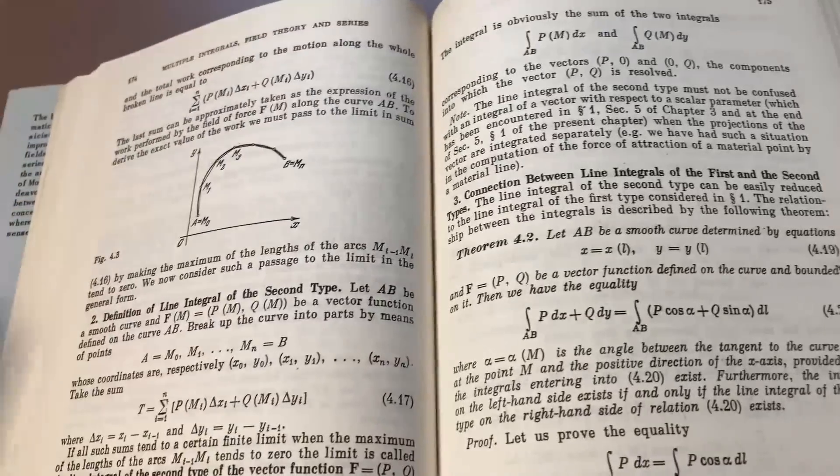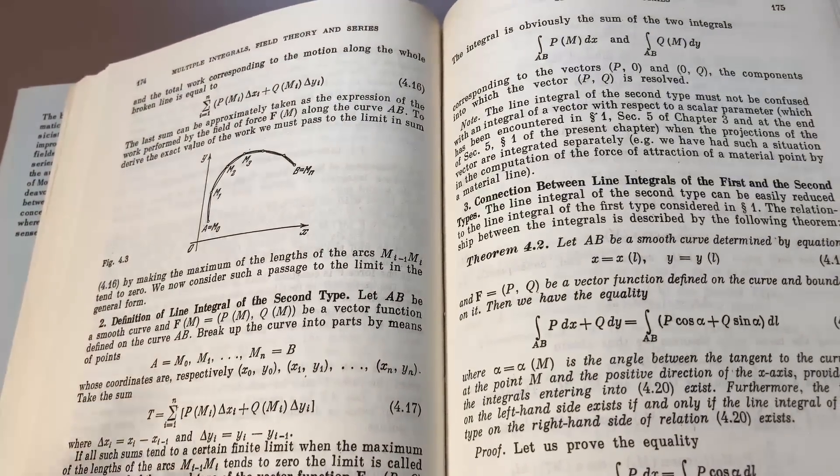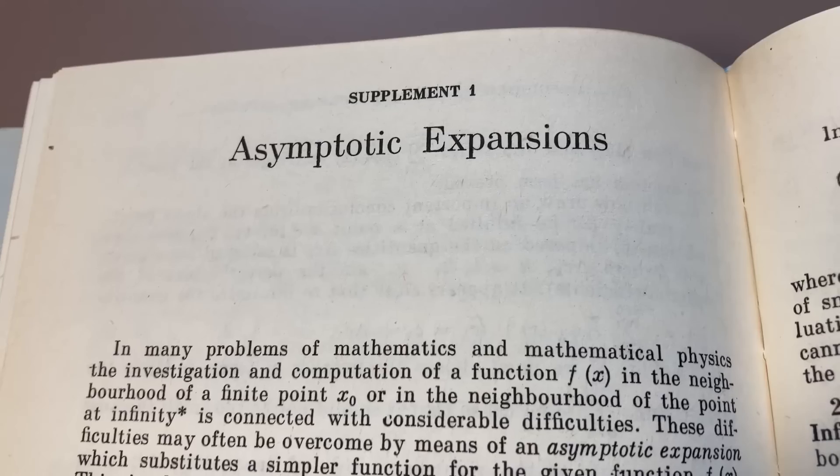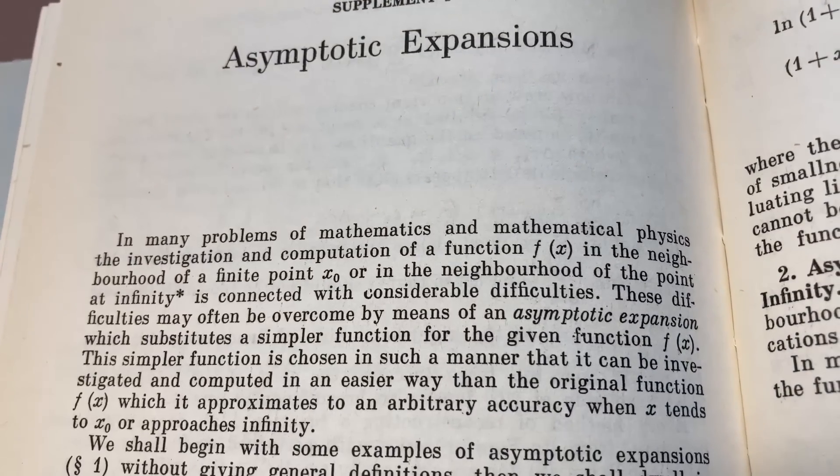I think this book is super cool because it has super interesting topics. And I don't think I have any other books like this. This is the only one that has this sort of mathematics all in one textbook. There are two supplements that come with this book. They're in the back. The first one is on asymptotic expansions.